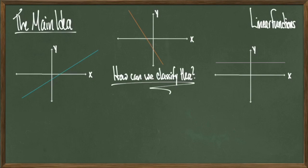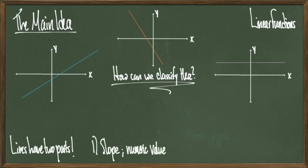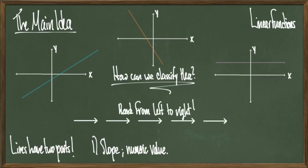To start classifying lines, we realize that lines have two main parts. The first part is called the slope, and the slope is going to be the steepness of a graph, which will be accompanied by a numeric value. Conventionally, we read graphs from left to right. This convention will help us classify what slopes look like. Starting with the blue graph on the left, if we read from left to right, we notice that the line points upward. In this case, we would say that this graph has a positive slope.